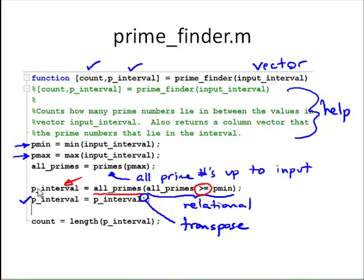So, we've got the first one. And then, we need to count how many prime numbers there are, and that's done by simply counting the number of elements in p_interval. So, we'll use the length built-in function that we talked about that simply counts the number of elements in the variable p_interval.